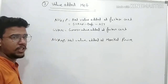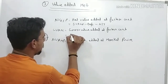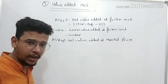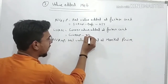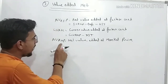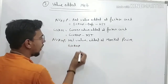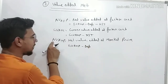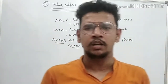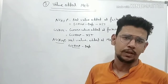Similarly, if asked for GVAFC (Gross Value Added at Factor Cost): you've already got GVAMP — just subtract NIT to get to Factor Cost. For NVAFC, take GVAFC and subtract Depreciation — or from NVAMC subtract NIT. All conversions follow the same logic: Gross minus Dep = Net; Market Price minus NIT = Factor Cost.